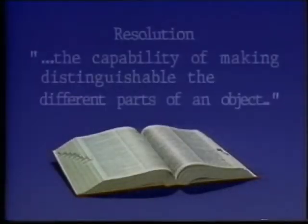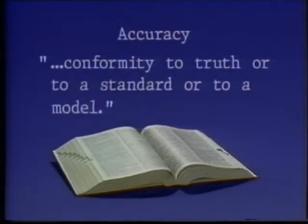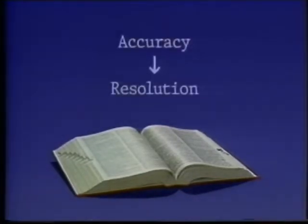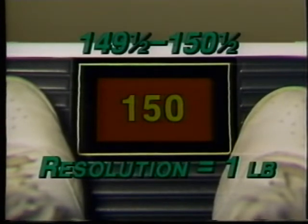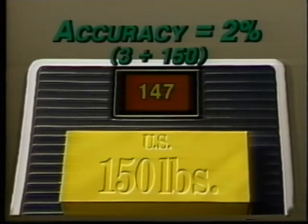Webster defines resolution as the capability of making distinguishable the different parts of an object, while accuracy is defined as conformity to truth or to a standard or model. To show the difference between resolution and accuracy, we'll use a scale with a three-digit readout. When you step on it, the display reads 150 pounds. The registered weight could have been anything from about 149.5 to about 150.5 pounds, so the resolution of this scale is one pound — the smallest unit that can be distinguished.